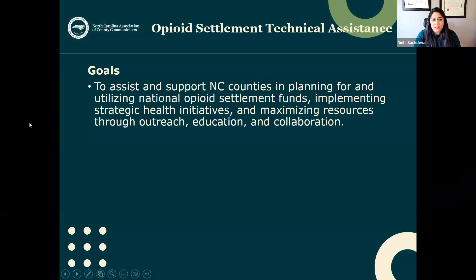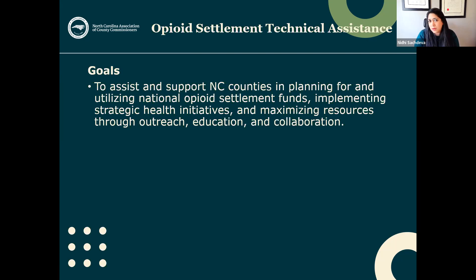The North Carolina Association of County Commissioners is positioned to help, and all 100 counties in North Carolina are getting dollars from the national opioid settlements. We have a membership base of all 100 counties, and we are setting up a strategic member services arm of our association to really help specifically with the complex questions and the exciting times that comes with the settlement.